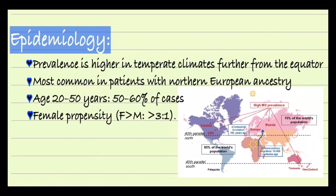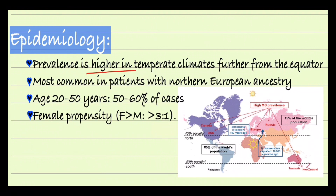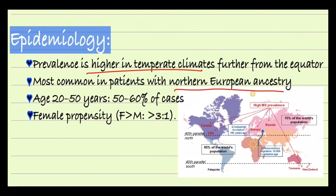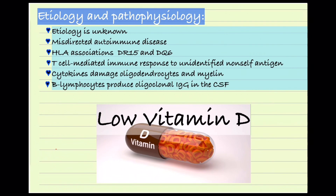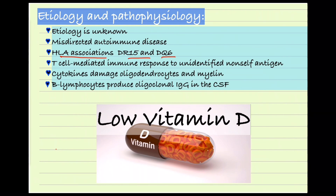Regarding the epidemiology of multiple sclerosis, your risk of getting MS is related to your distance from the equator. The prevalence is higher in temperate climates, further away from the equator, most commonly in those of Northern European ancestry. Multiple sclerosis affects females more often than males, and the age group when symptoms usually develop is in the 20s to 50s.